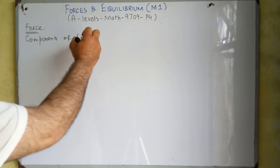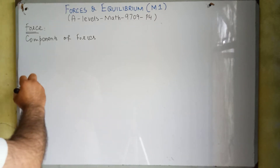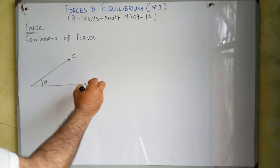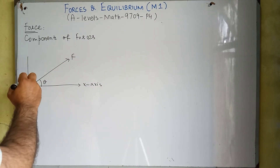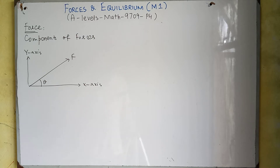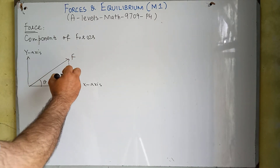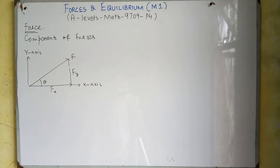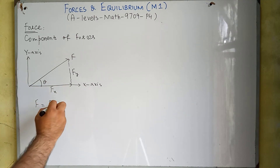Let's suppose a force F is acting at angle theta with the x-axis. We can see that this force F is making an angle theta with the x-axis and we are supposed to find its vertical and horizontal components. If we apply the head-to-tail rule at this diagram, we will be able to find the relation: F is equal to Fx plus Fy.